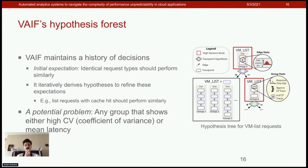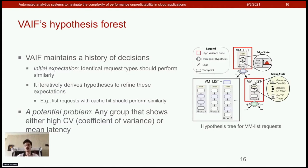VAIF starts with the expectation that identical request types should perform similarly. For example, the first expectation is that list requests should perform similarly. VAIF collects traces, groups them by request type, and iteratively derives hypotheses by enabling trace points to refine these expectations. A refined expectation might be: list requests with cache hit should perform similarly, and list requests with cache miss should perform similarly. In the next round, VAIF groups traces under this new expectation, and these hypotheses create nodes in a tree, with new groups of traces analyzed in subsequent rounds.